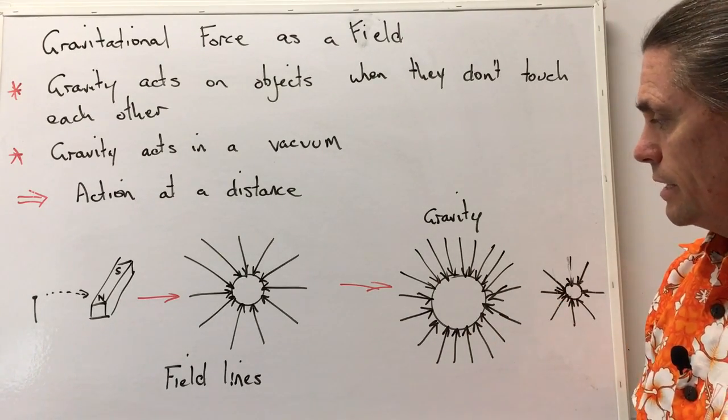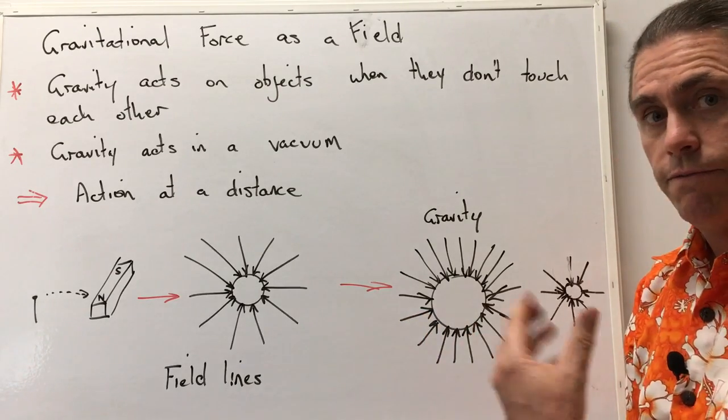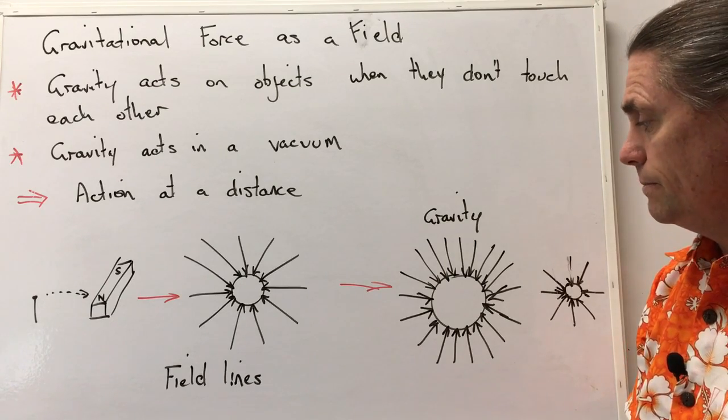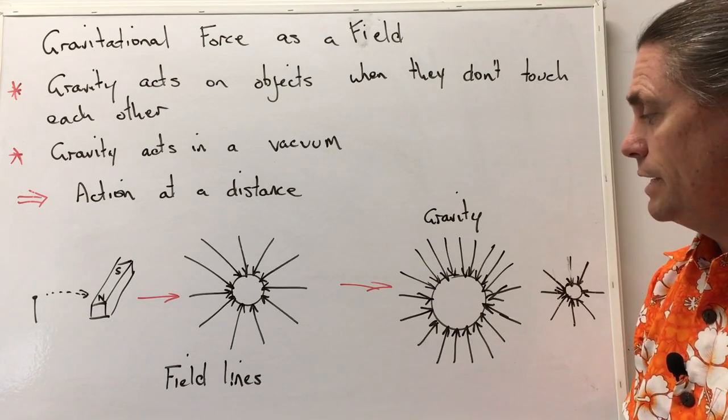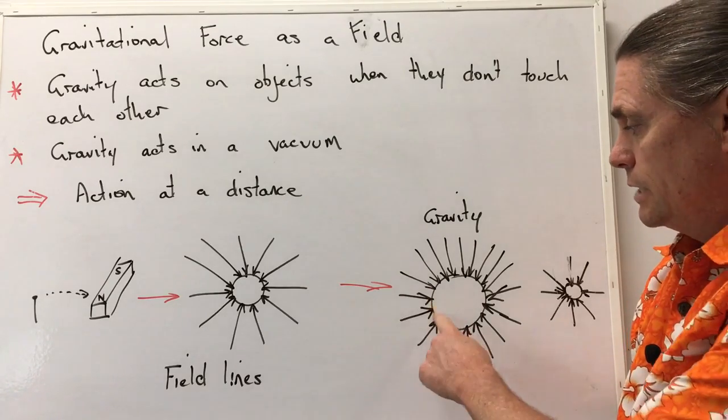Second of all, as we move out our distance from our object, we find that our field strength decreases as well. And that's what we observe with gravitational fields. Close to Earth we've got a strong gravitational field.